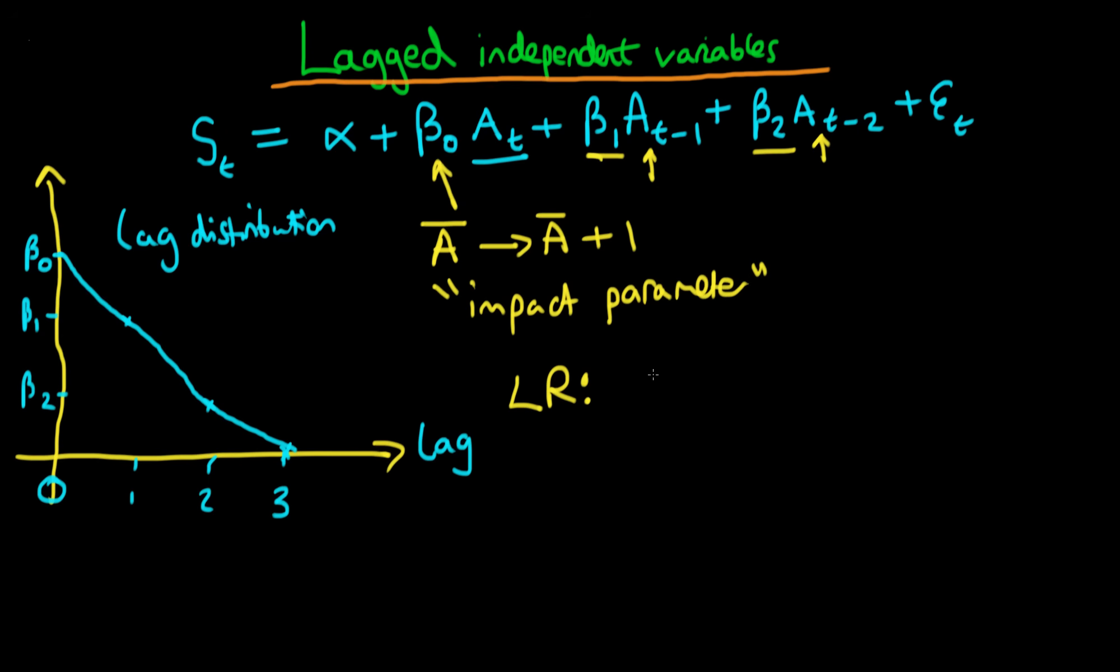So the idea here is that we specify before the change that advertising at time t is just fixed. The amount of advertising which is being spent every week is just fixed, and then from that we get a corresponding fixed level of sales, which using our model is equal to alpha plus beta naught times A bar, but we're going to have A bar in all of these after each of these coefficients, so we can just write that S bar is equal to alpha plus (beta naught plus beta 1 plus beta 2) times A bar. And we assume that on average this error term is zero, so we just forget about it for now.